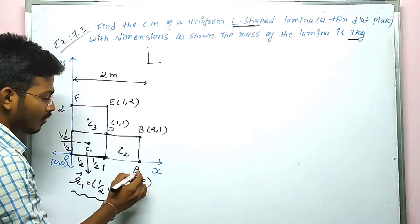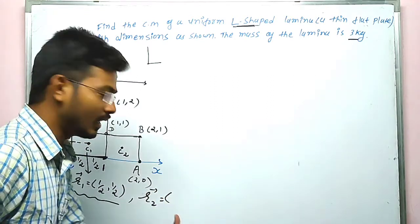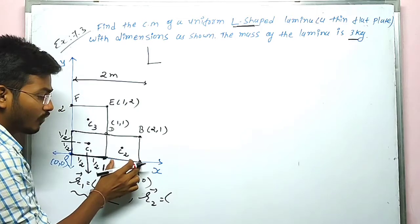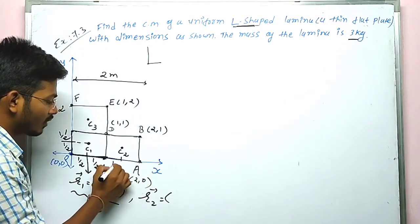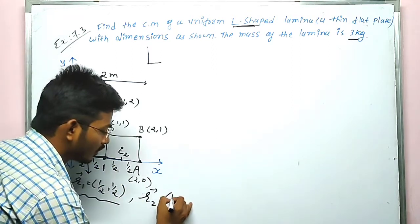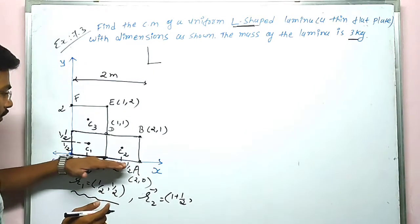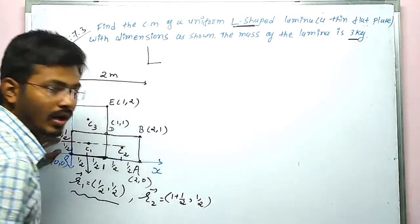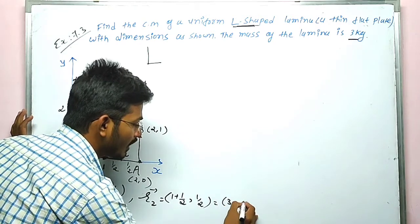Now regarding the position vector r2 for center c2: the x-coordinate is 1 plus 1/2, which simplifies to 3/2, and the y-coordinate is 1/2. So the position vector r2 is (3/2, 1/2).